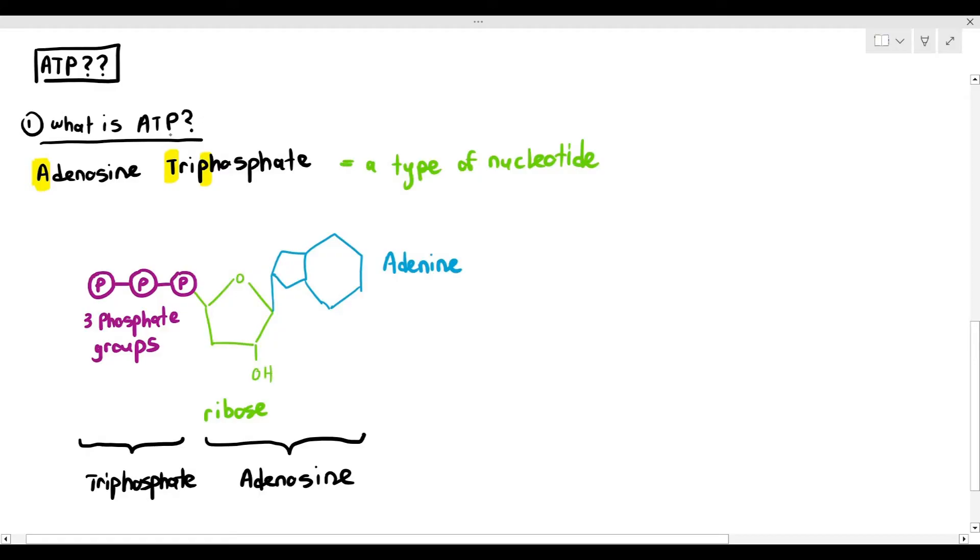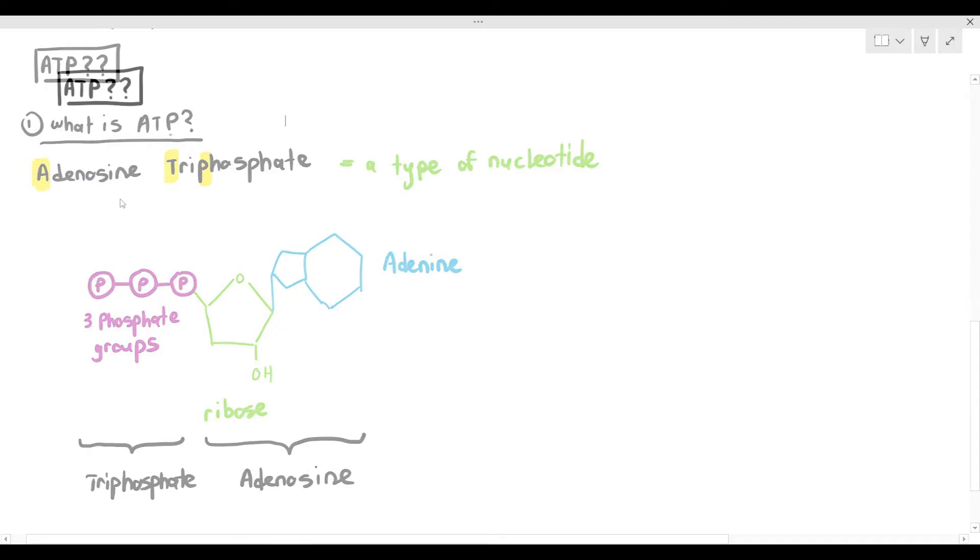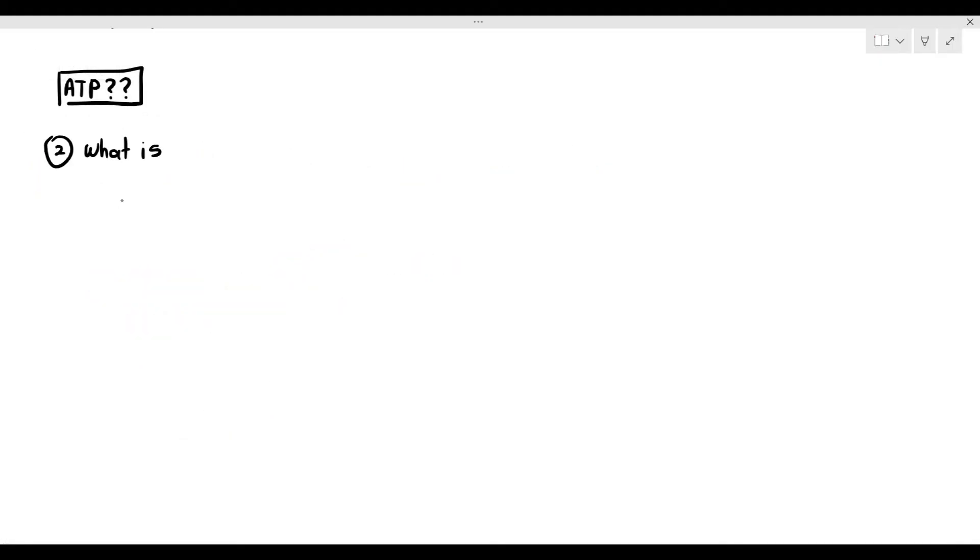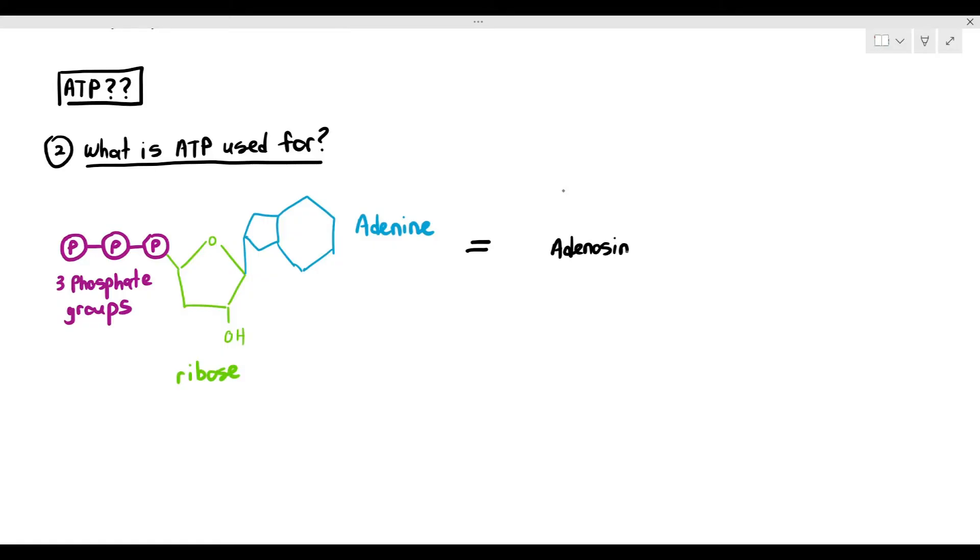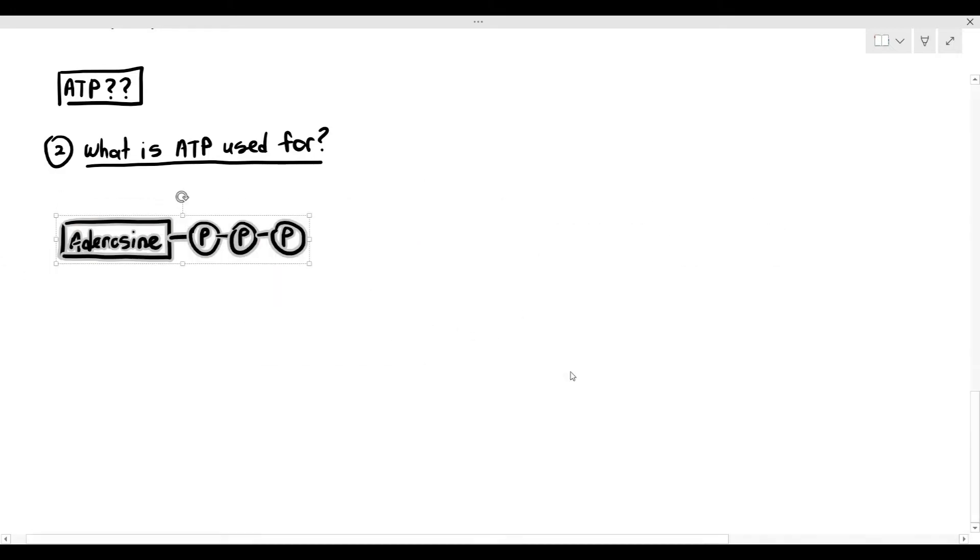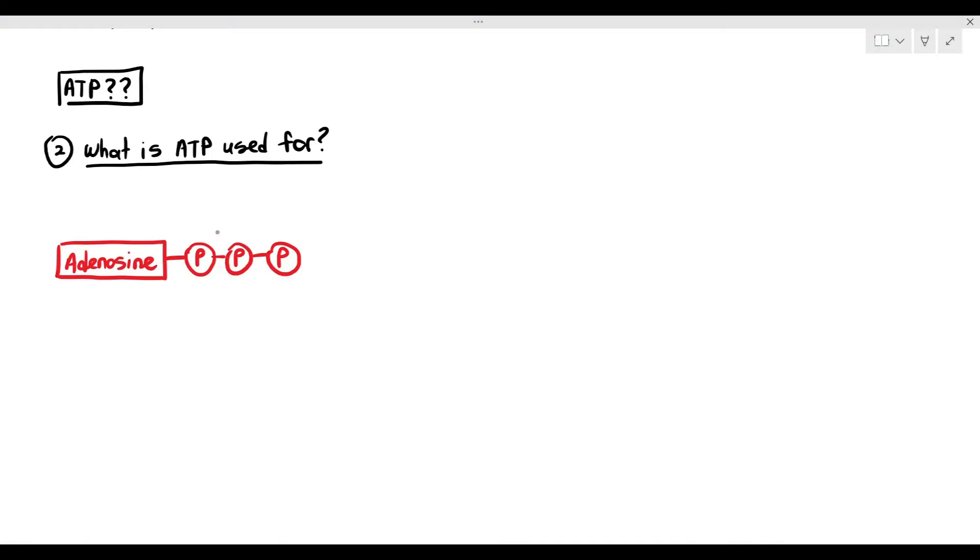So you do have to know the structure of ATP for the exam. They may ask you to describe it, or sometimes they might ask you to draw it out. So the next question that we then have to ask is, what is ATP actually used for? In the future diagrams, I'm not going to draw out ATP in its chemical structure. I'm going to represent ATP as adenosine, represented as a rectangle, and the triphosphate, which are the three P's attached to the adenosine.